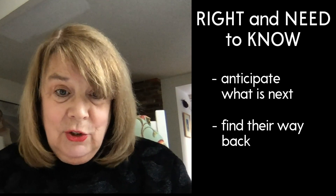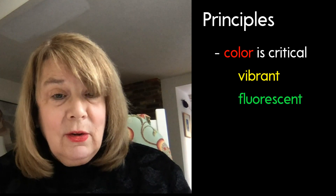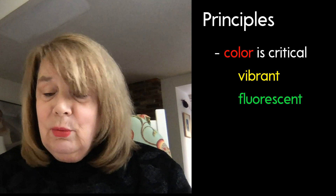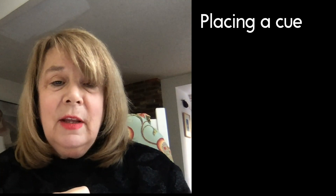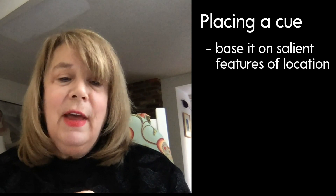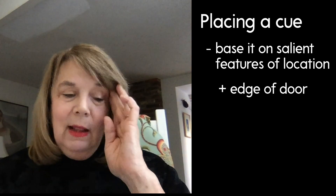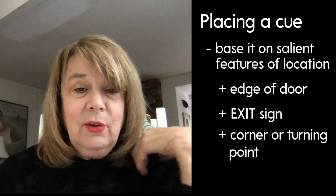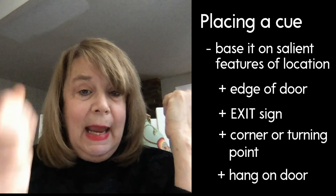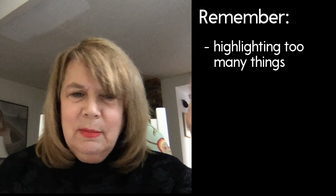Environmental adaptations follow a few principles. Obviously, color is critical. The use of a vibrant, usually fluorescent color can be very helpful. I recommend that when you're placing a color cue somewhere in the environment, you do it based on the salient feature of that environmental location — so the edge of a door, highlighting where an exit sign is, or a corner where a person needs to turn to get to a particular destination. Some people hang things on a door, and that could change day by day depending on where the student is moving. But to highlight too many things is to make nothing salient.